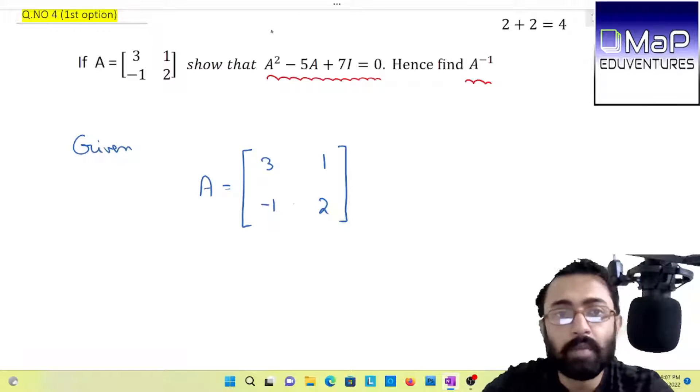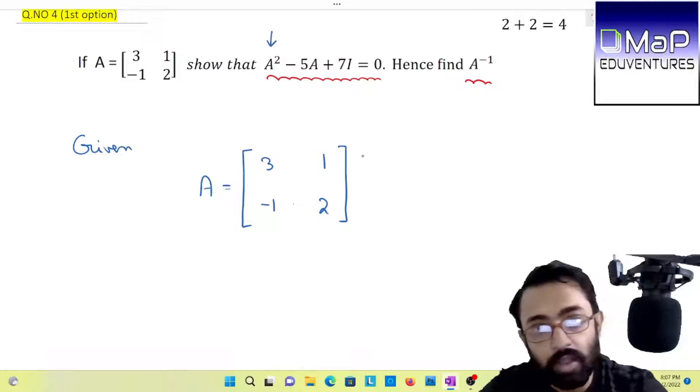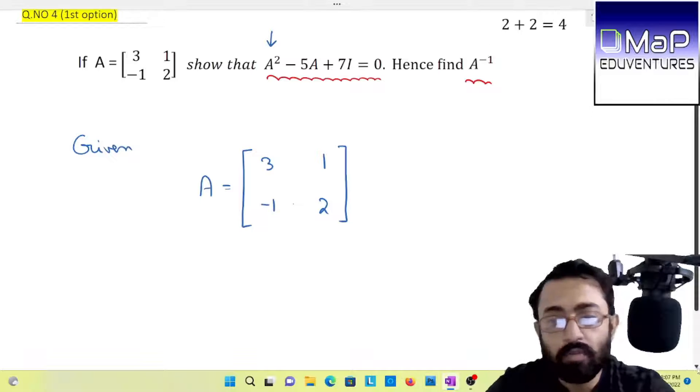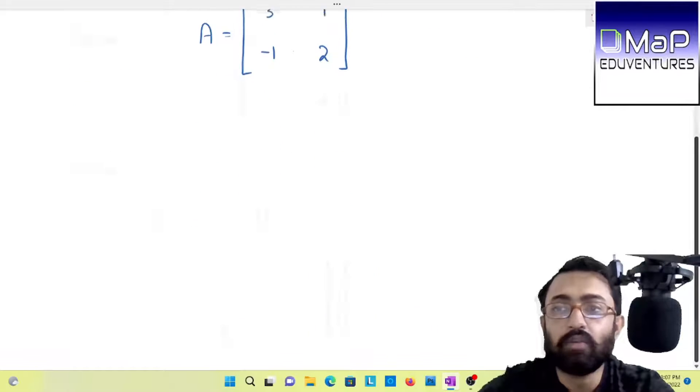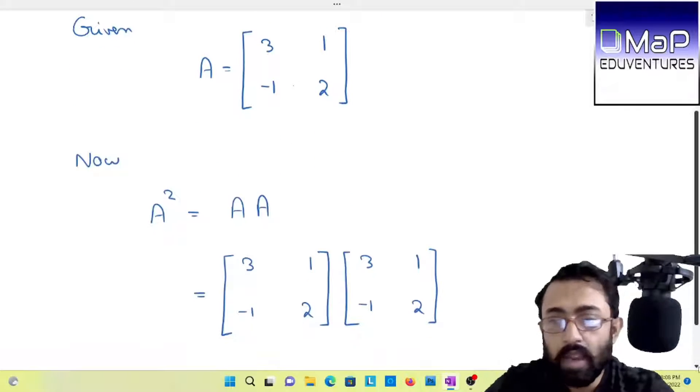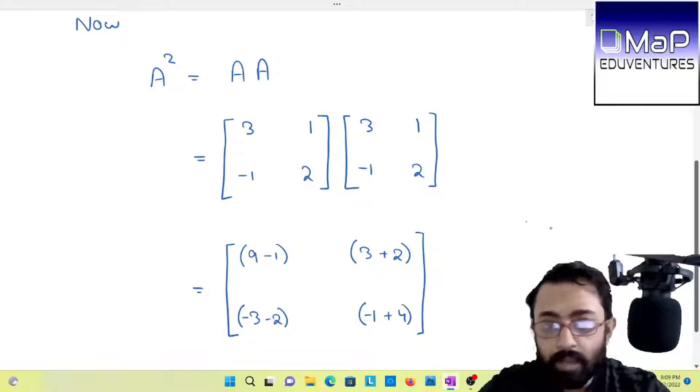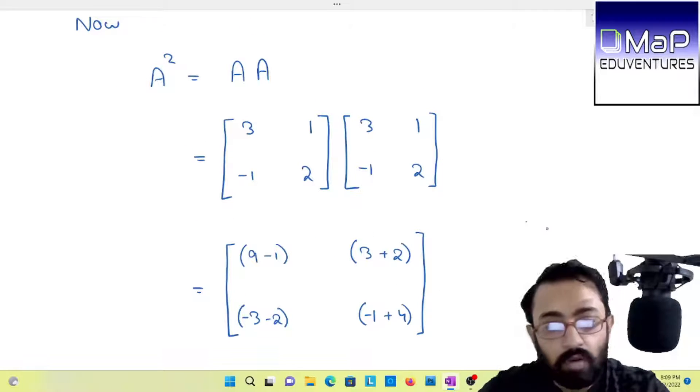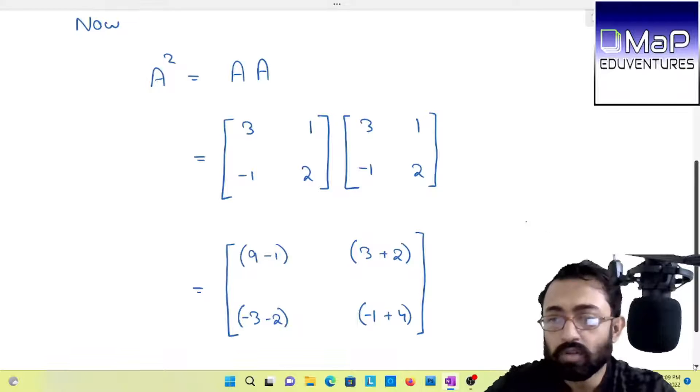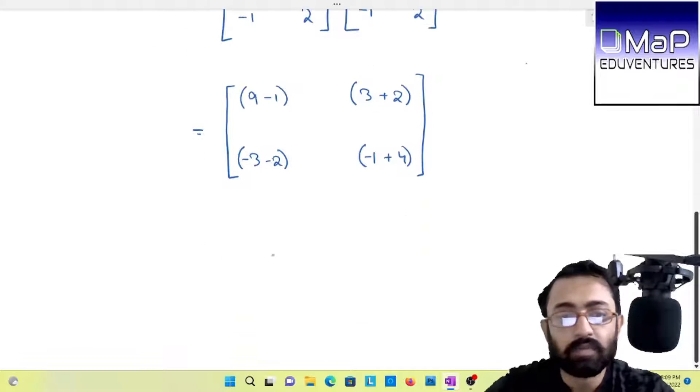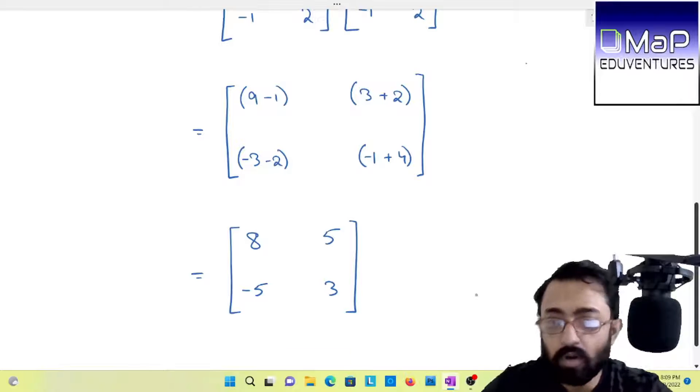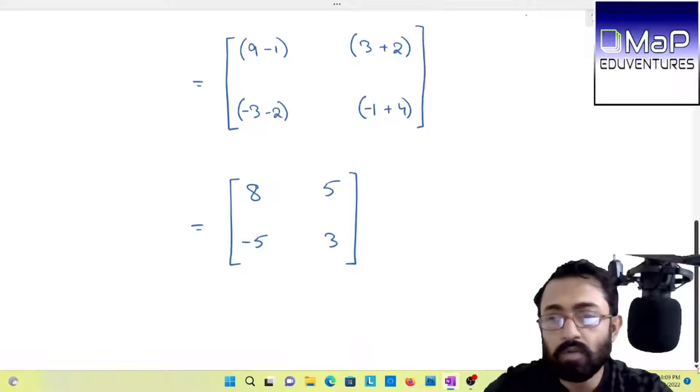Let us begin. Given matrix, now obviously I have to find A square. So A square I will get by multiplying A into A. I have already multiplied it for you, very simple approach. So this is your A square.